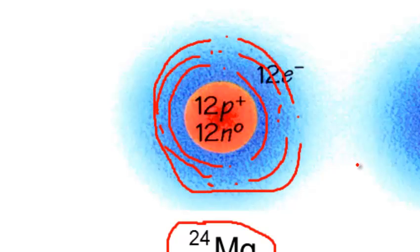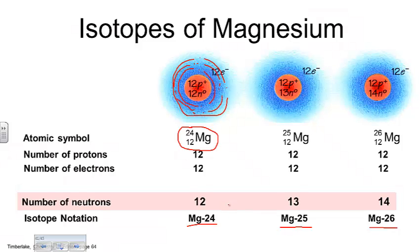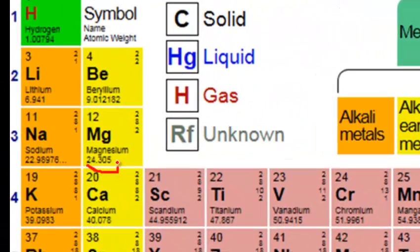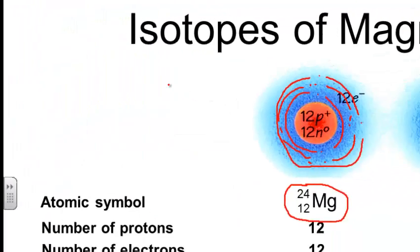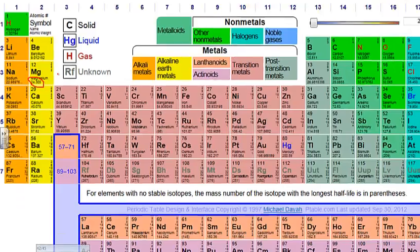Magnesium-25 has 13 neutrons, and magnesium-26 has 14 neutrons. All these forms of magnesium exist, but some are more common than others. The average on the periodic table — 24.305 — is reflective of the relative abundance of these isotopes. Magnesium-24 is probably a bit more common than the other forms, but magnesium-25 and 26 exist, which brings the average above 24.